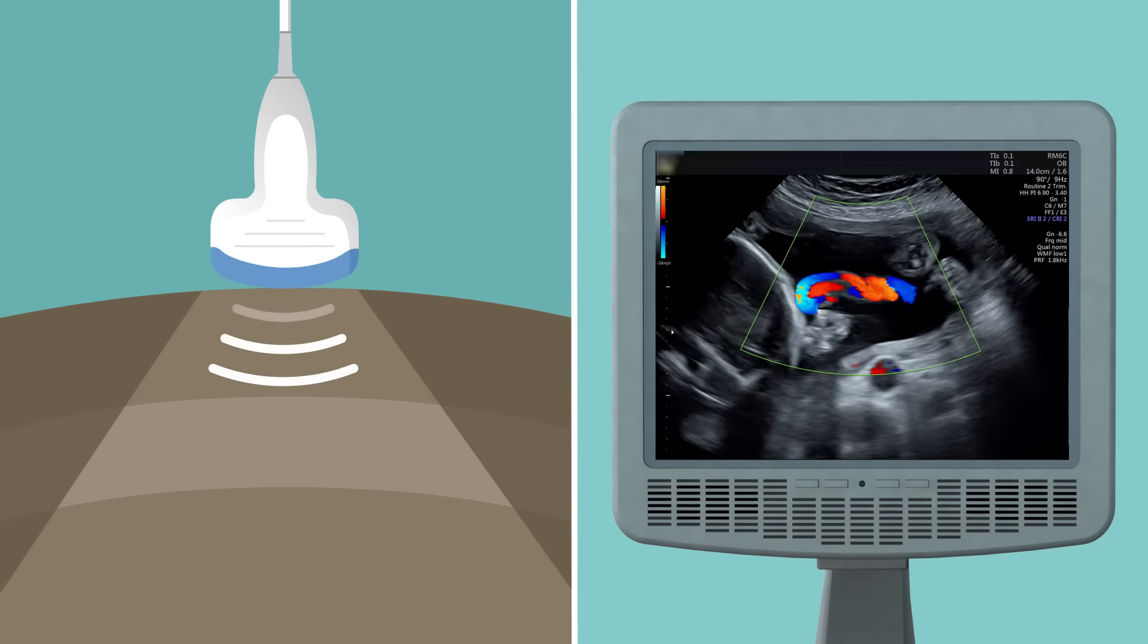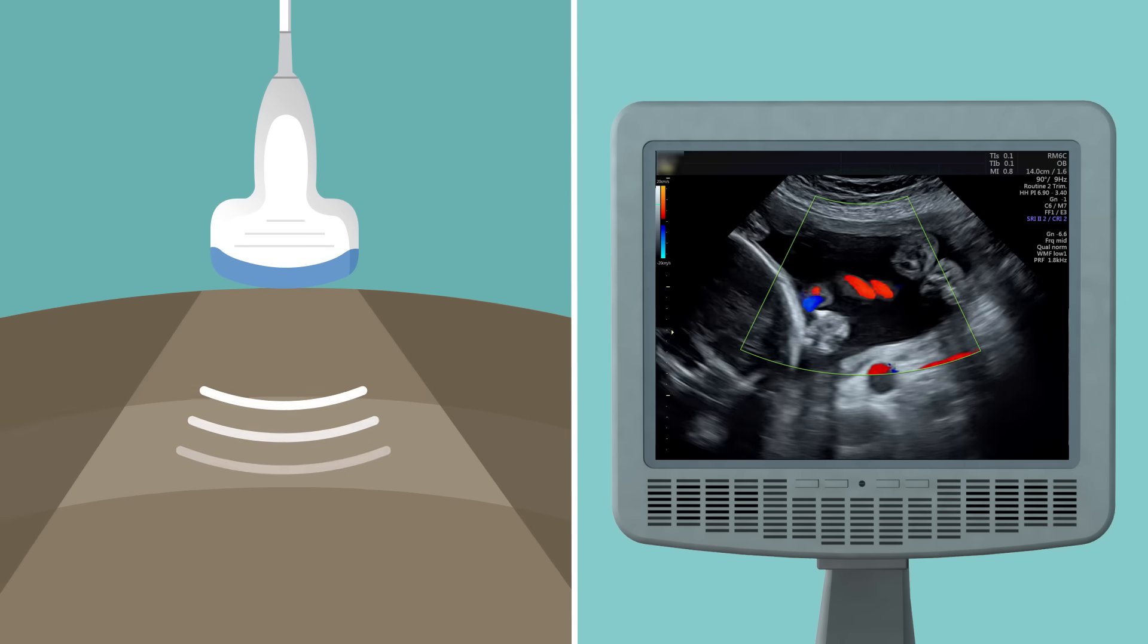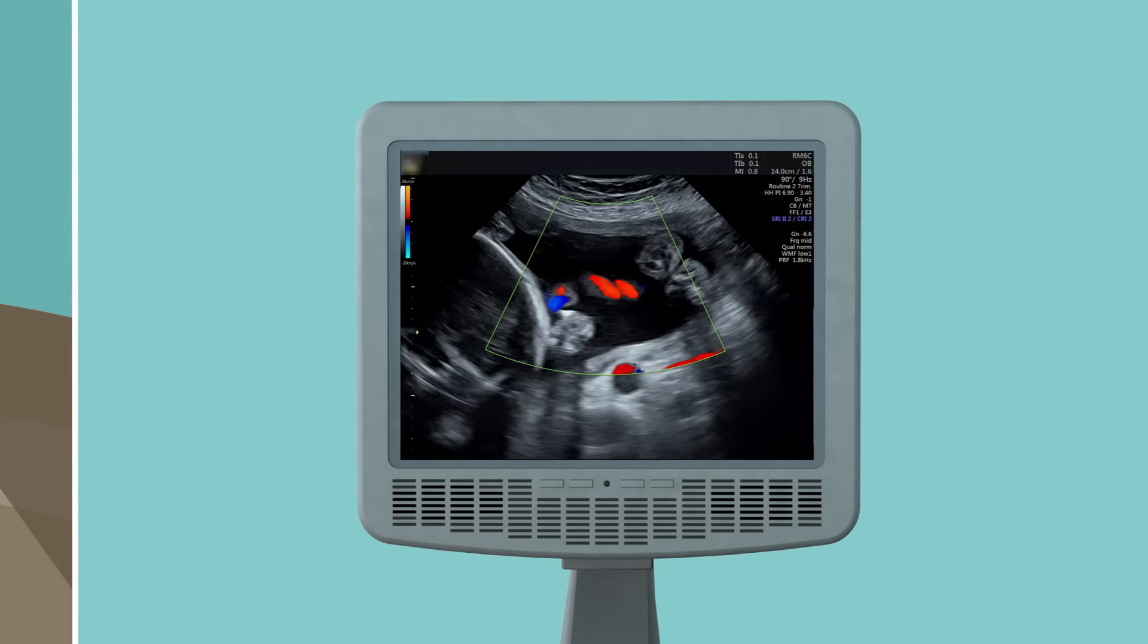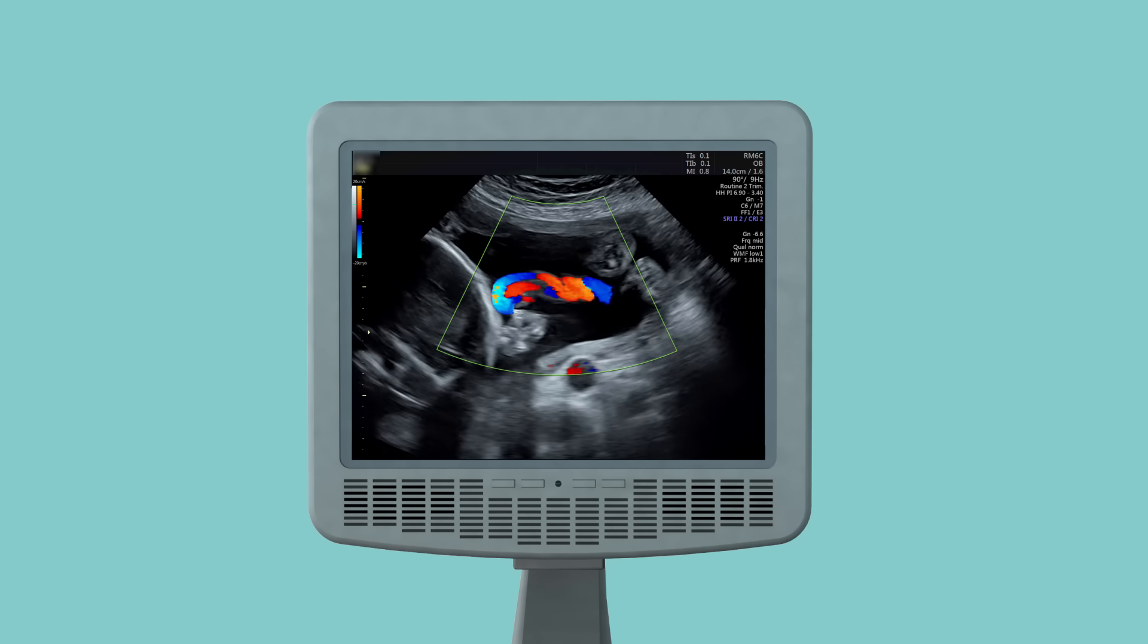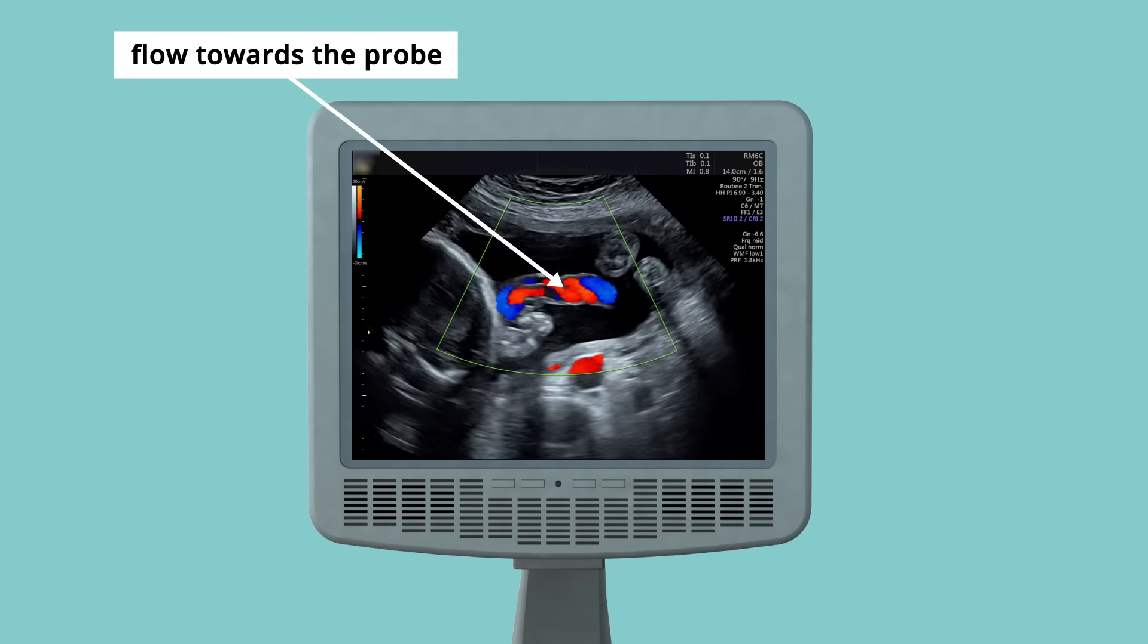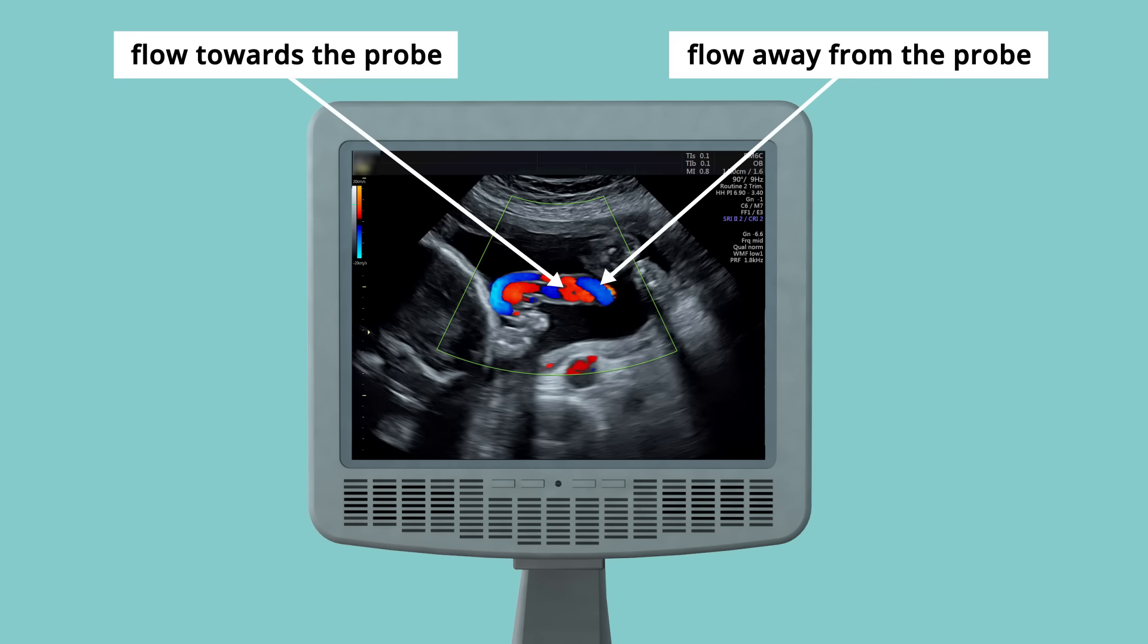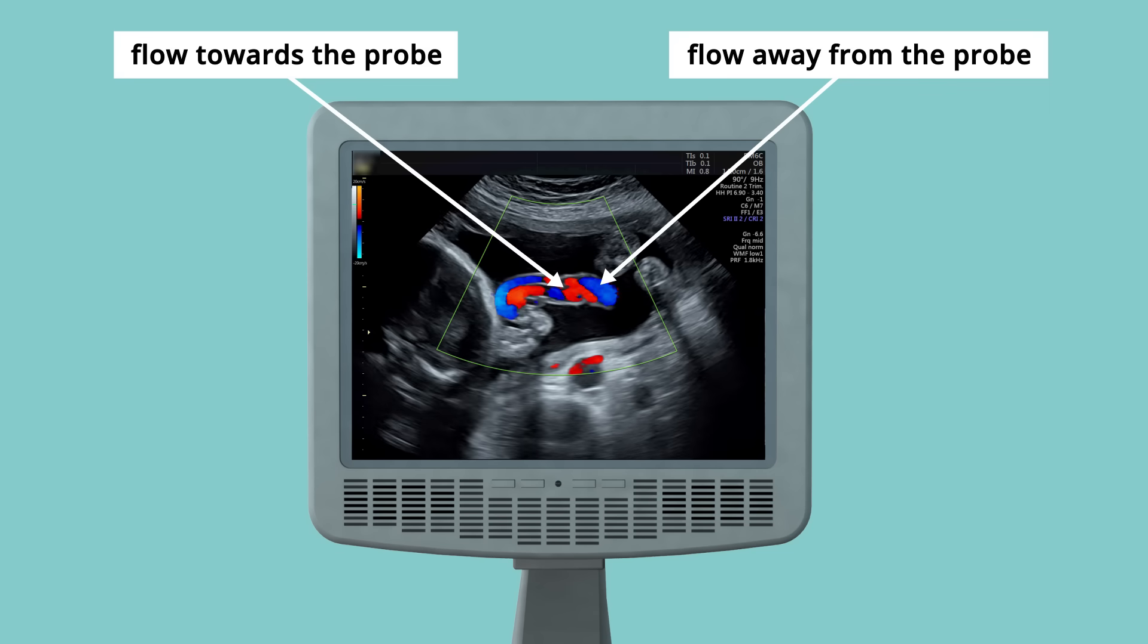Ultrasound machines are able to record this shift in frequency to measure movement within the body, for example, to show the speed and direction of blood flow within an artery. This is most commonly shown with color, where movement towards the probe is shown as red on the display and movement away from the probe as blue. In addition to color Doppler, other common types of Doppler are pulsed wave Doppler and power Doppler.